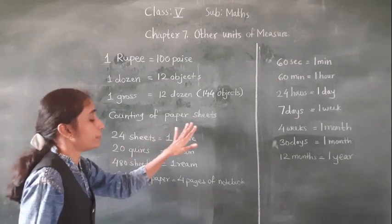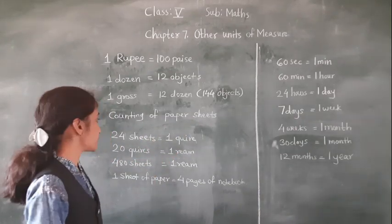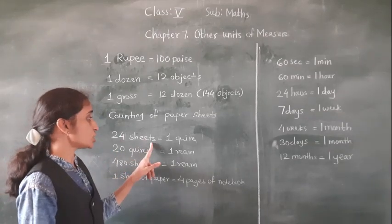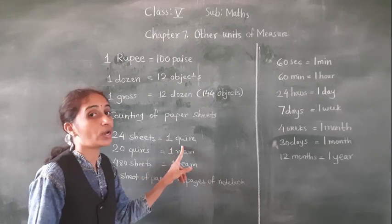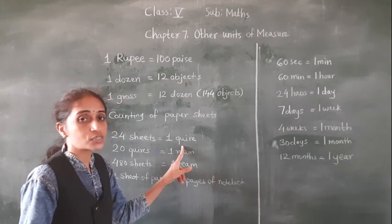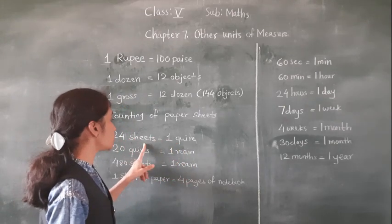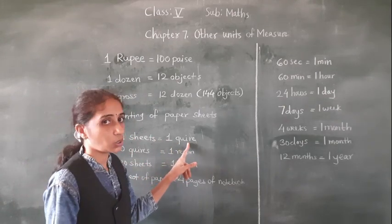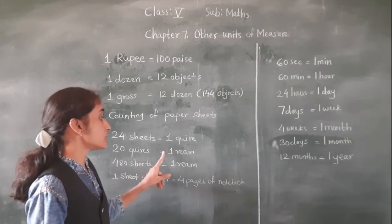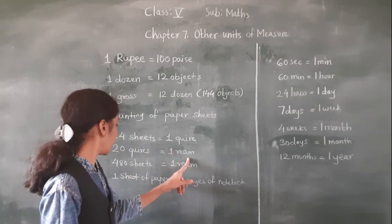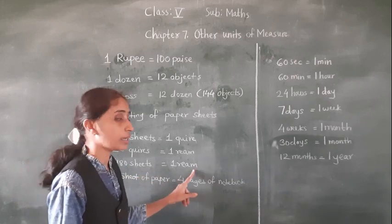Now, counting of paper sheets. How to count paper sheets. 24 sheets is equal to 1 quire. These units we have to keep in mind. 24 sheets is equal to 1 quire. 480 sheets is equal to 1 ream.